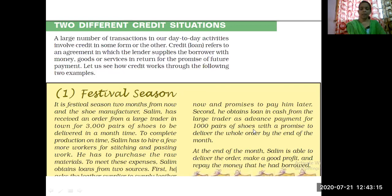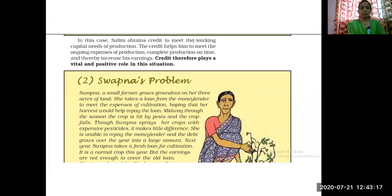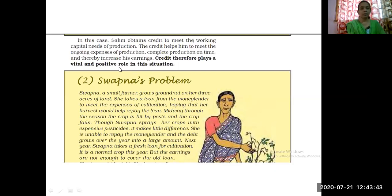In this way, Salim used credit and completed his order, earning a profit. This is one way credit worked in a positive manner. Salim obtained credit to meet the working capital needs of production. The credit helped him meet ongoing expenses of production, complete production on time, and thereby increase his earnings. Credit, therefore, plays a vital and positive role in this situation.